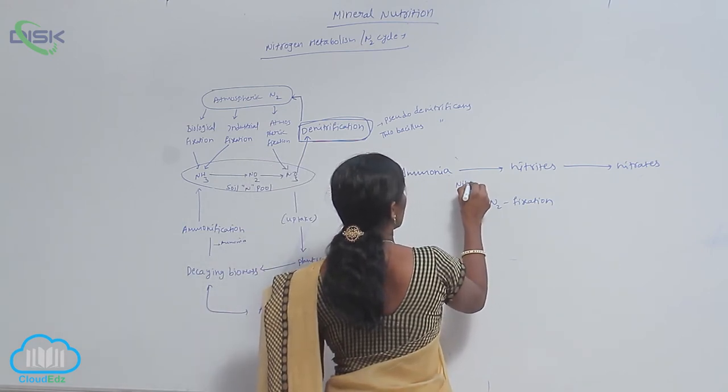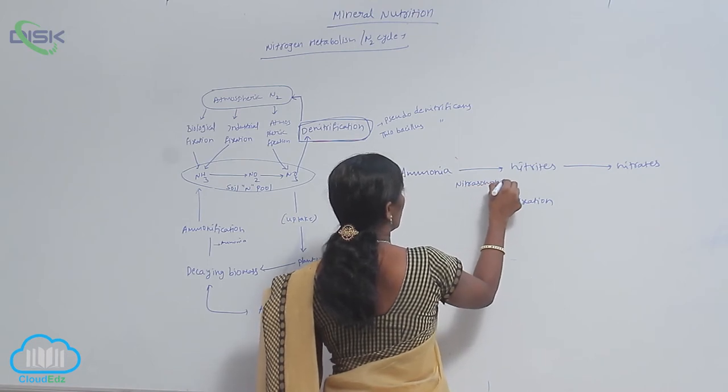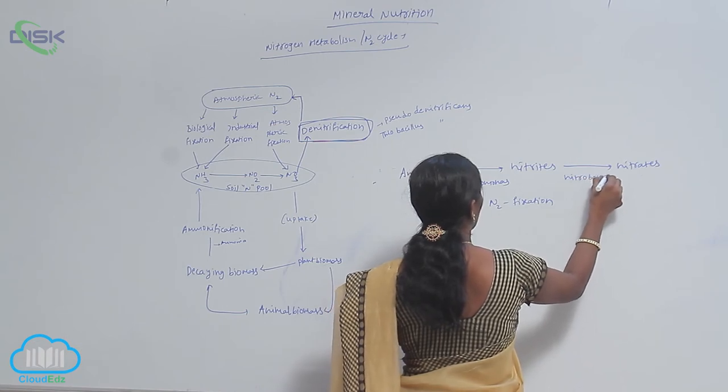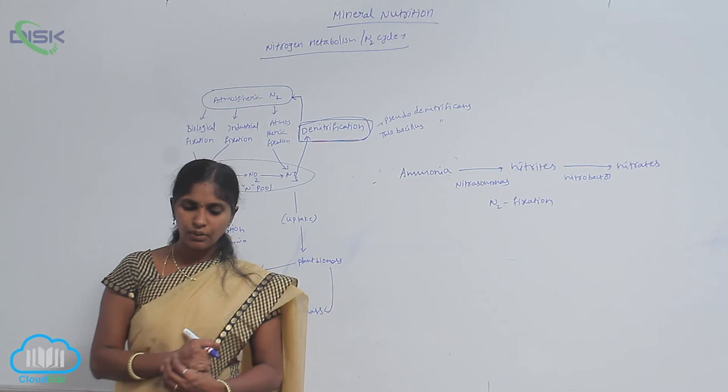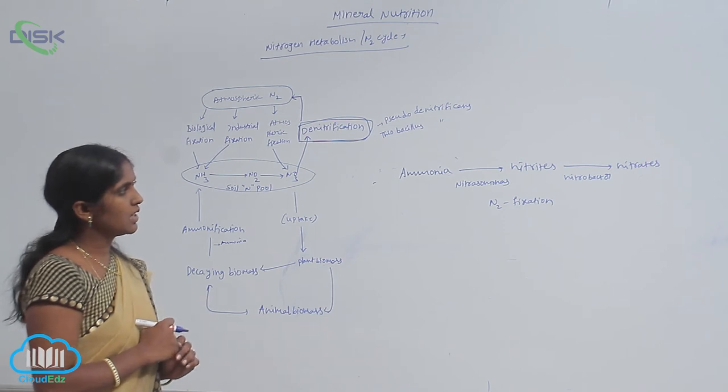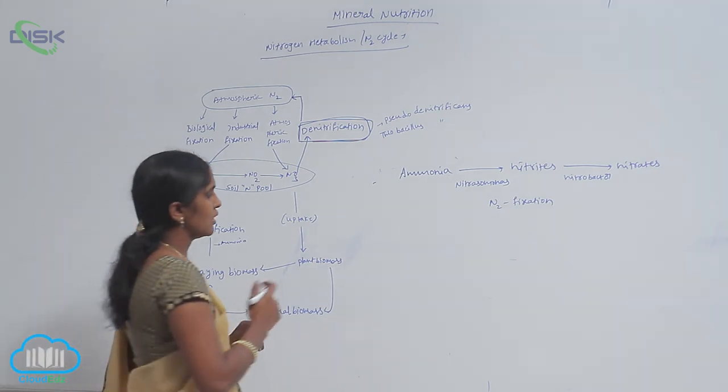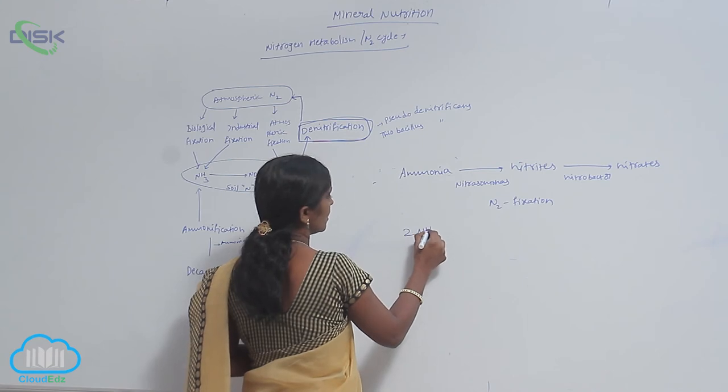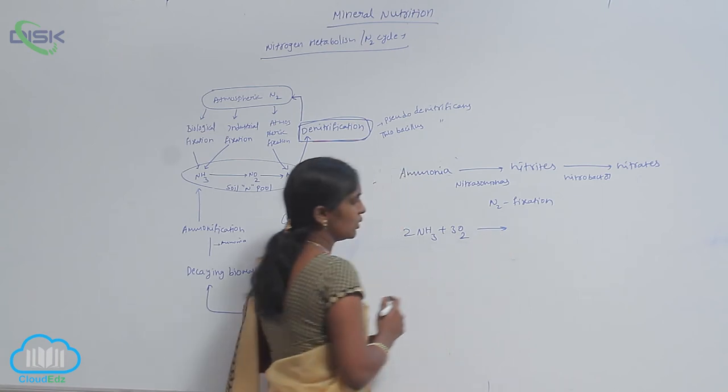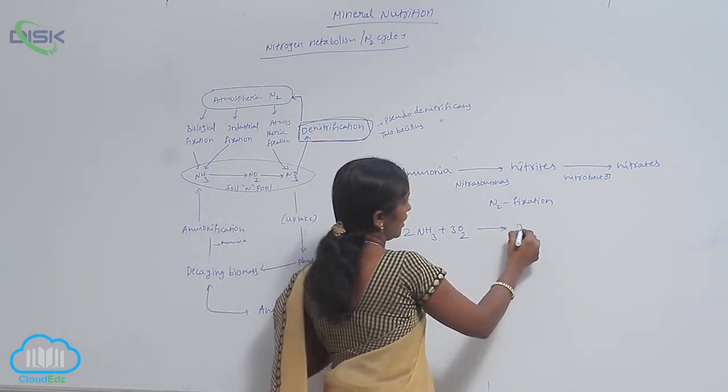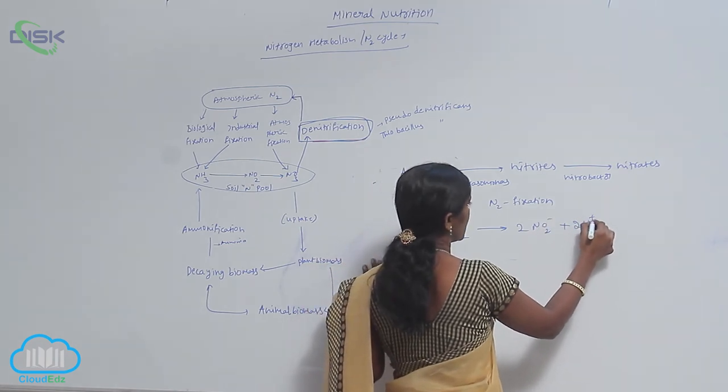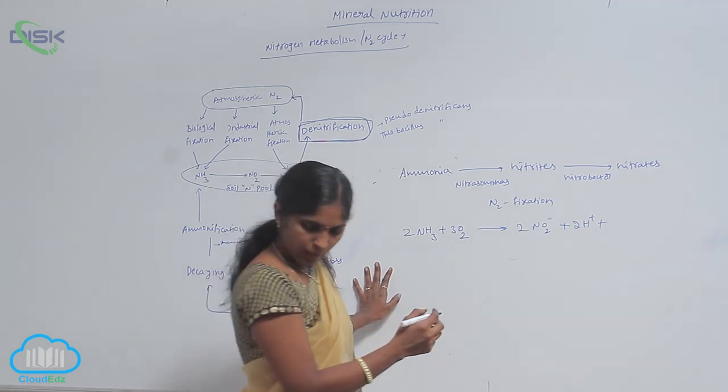Nitrosomonas and Nitrobacter work for the conversion of ammonia to nitrites and nitrites to nitrates. 2NH3 + 3O2 gives 2NO2- + 2H+ + 2H2O.